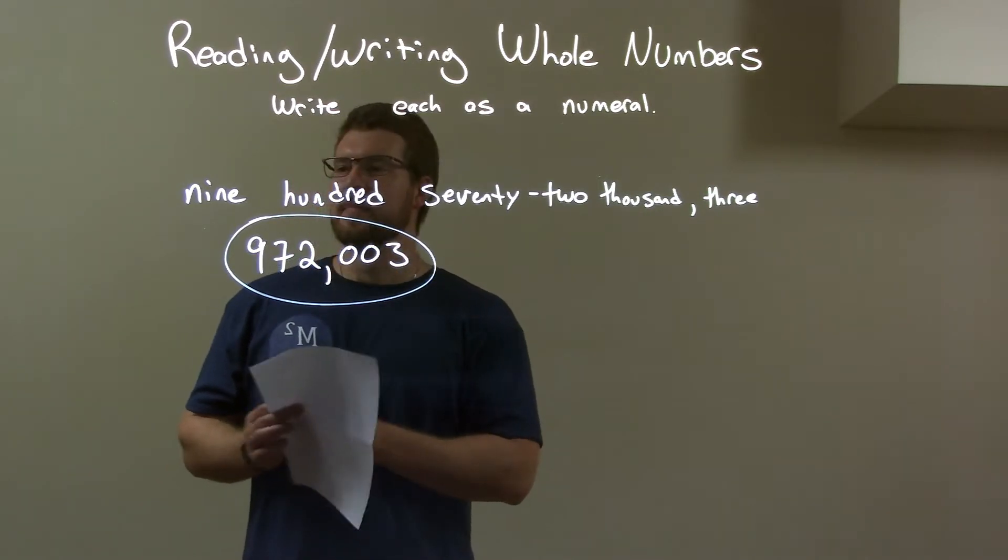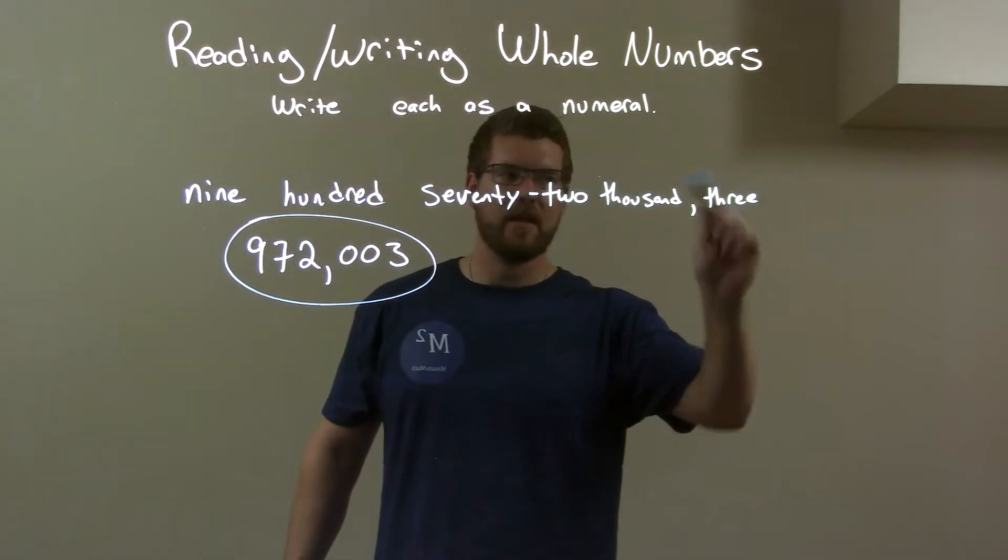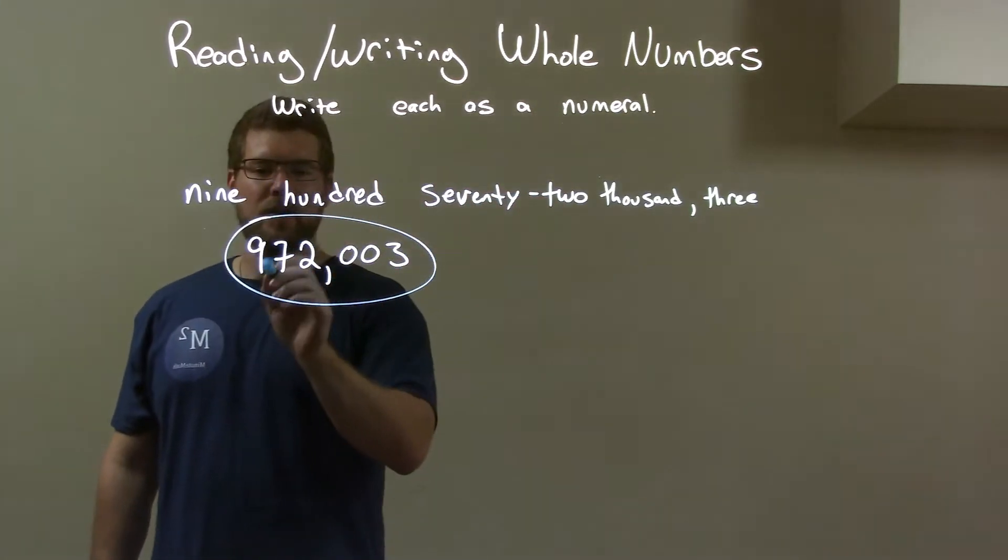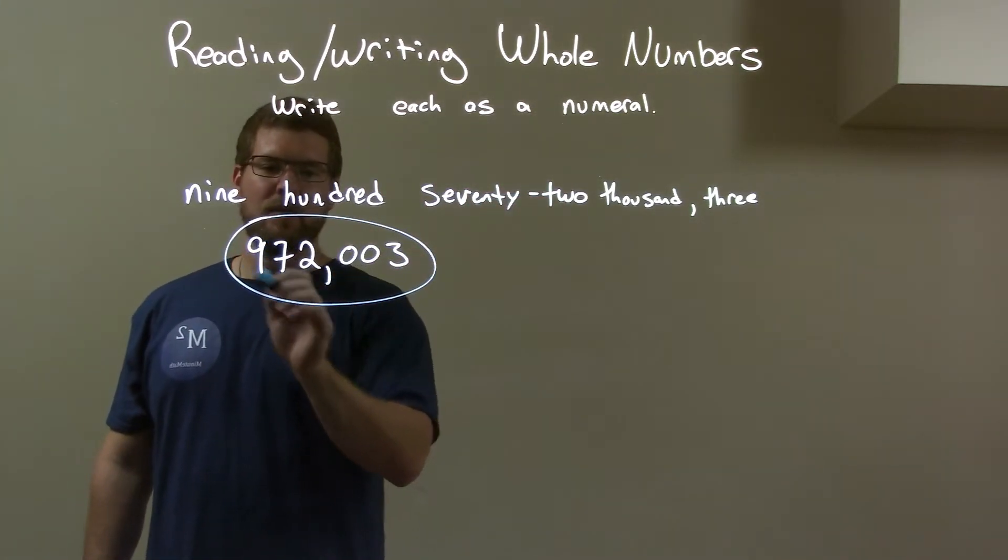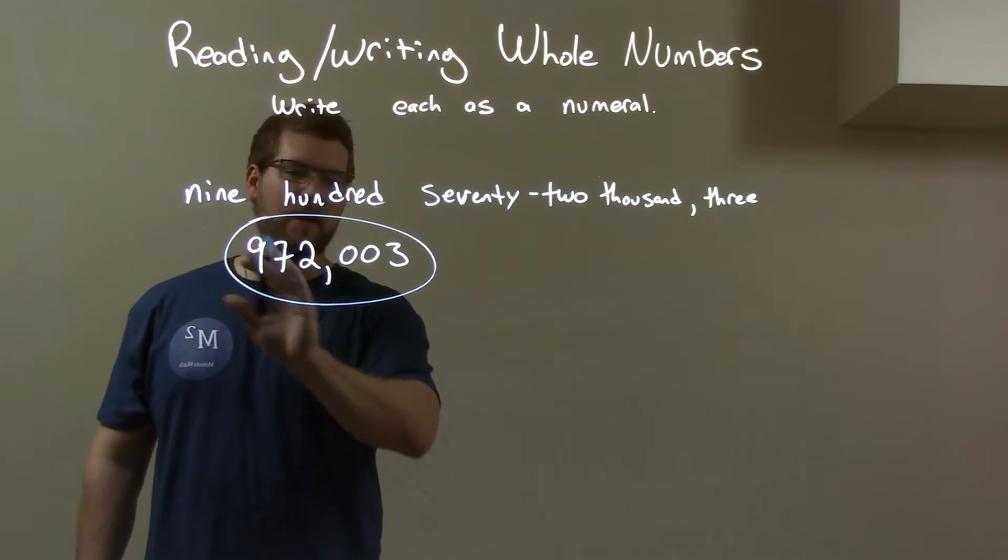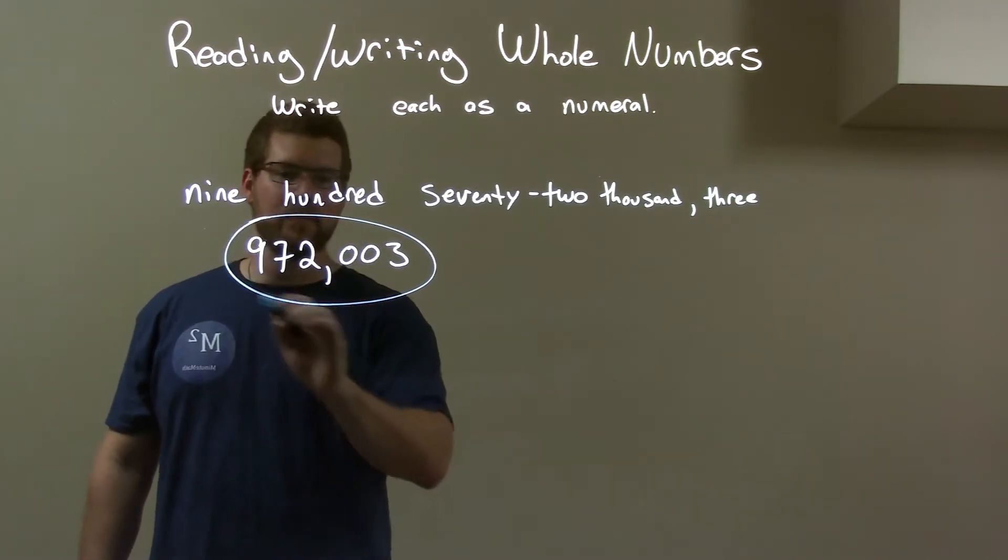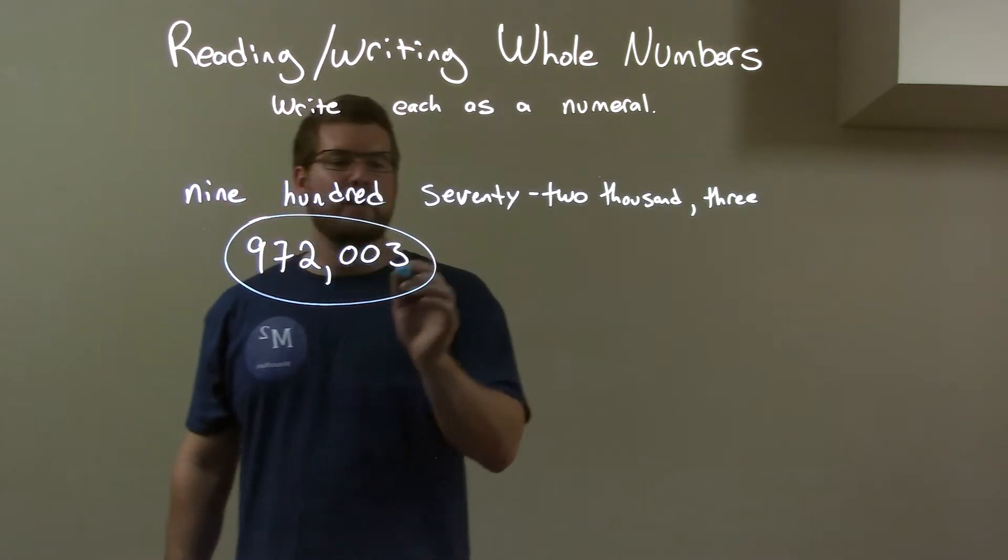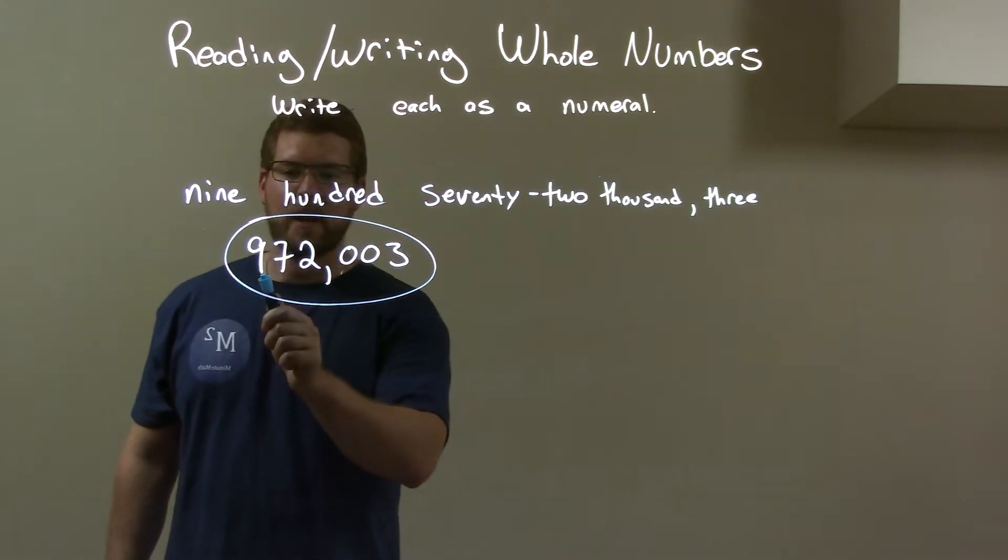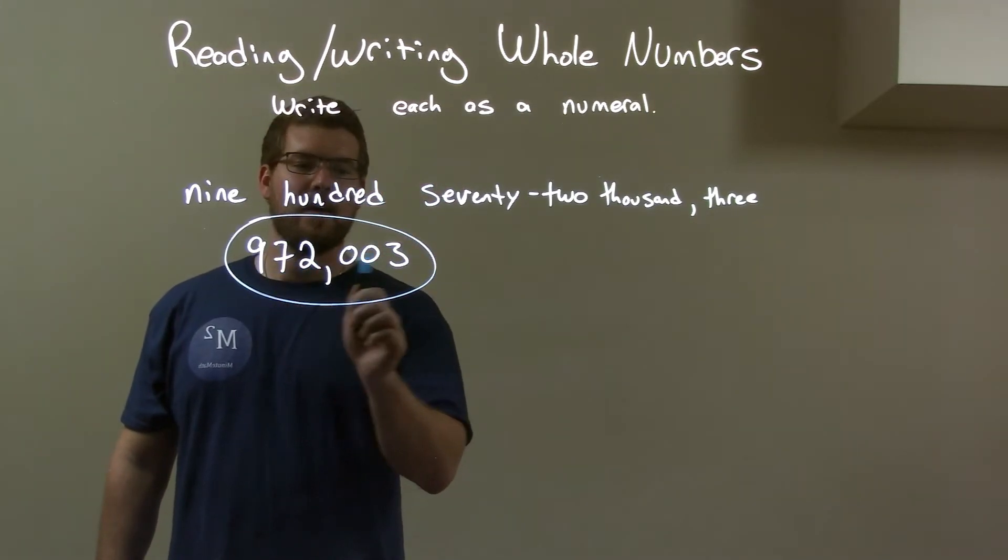So quick recap. We're given 972,003. We have 972 right here. So 972 in the thousands. From that section there, the thousands, all three together. Then we just have three afterwards. So we have 972 and three.